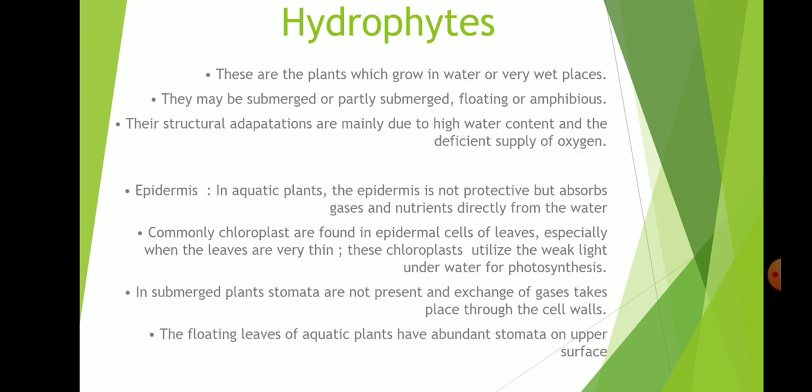Submerged plants do not have stomata on all surfaces, so how does gas exchange occur there? Gas exchange occurs through the cell wall. Floating leaves in aquatic plants have abundant stomata on their upper surface.